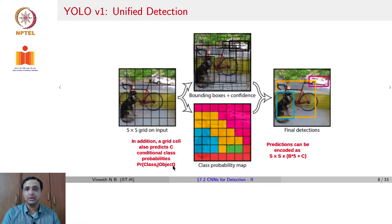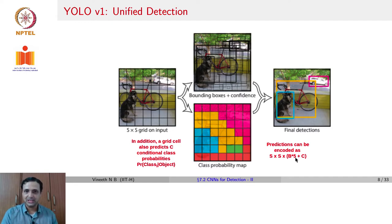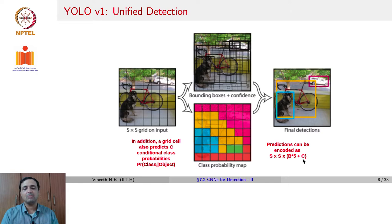You could consider this as computing the probability of class i given an object — a conditional probability. The final predictions can be encoded as: you have an S×S grid, and at each grid location you predict B bounding boxes. For each of those B bounding boxes, you have five values: four coordinates representing the center of the object and the width and height, plus a confidence for each bounding box. You also have C class probabilities per grid cell. That is how you get S×S×(B×5 + C) total outputs before applying non-max suppression.